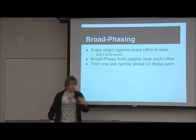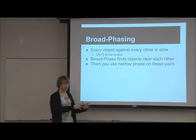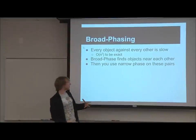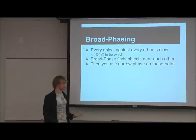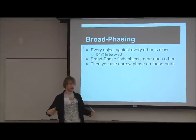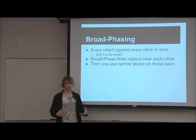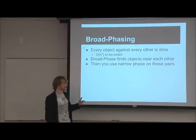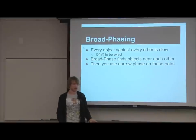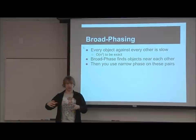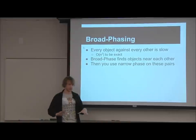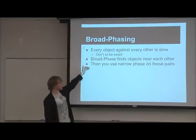Broad-phasing: when talking about collision detection, there's the narrow phase and the broad phase. The narrow phase is checking one object against another — usually pretty expensive. If we just check every object against every other object, that's O(n²). With a thousand objects, that's roughly a million checks — very slow. Broad phase gives us pairs of objects that are close to one another, so we only run expensive narrow-phase checks on those pairs instead of every combination.